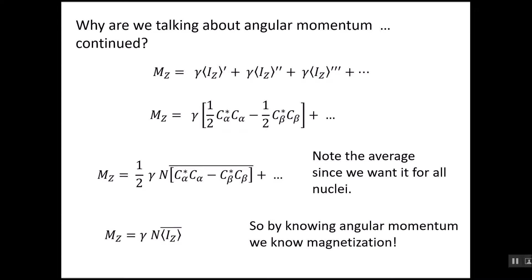By similar reasoning, we can get magnetization for x and the magnetization in the y direction. This is very useful after pulses where we create x and y magnetization. I think that's as far as we should go this time around. The next lecture will continue and show what you do with these.